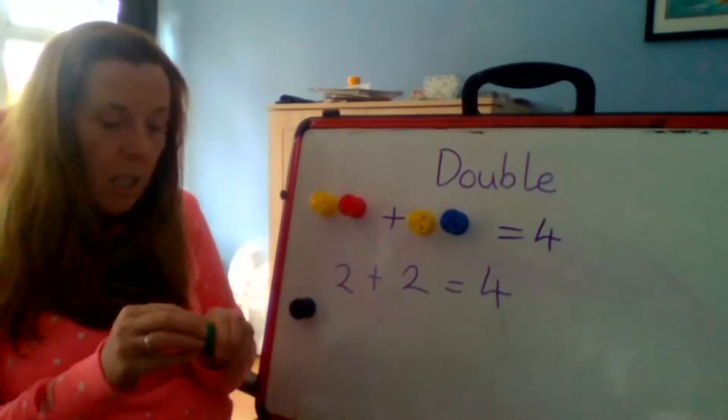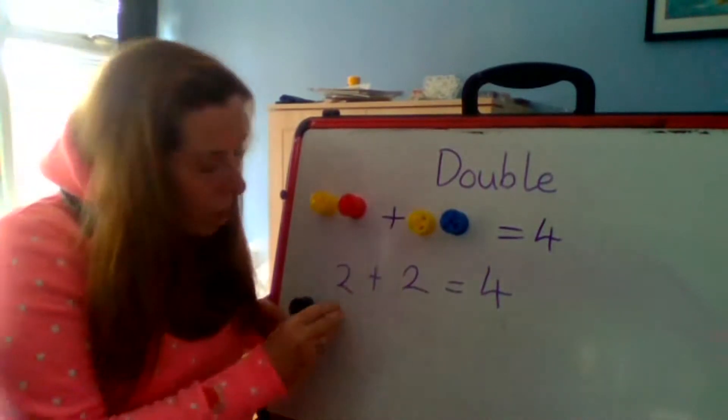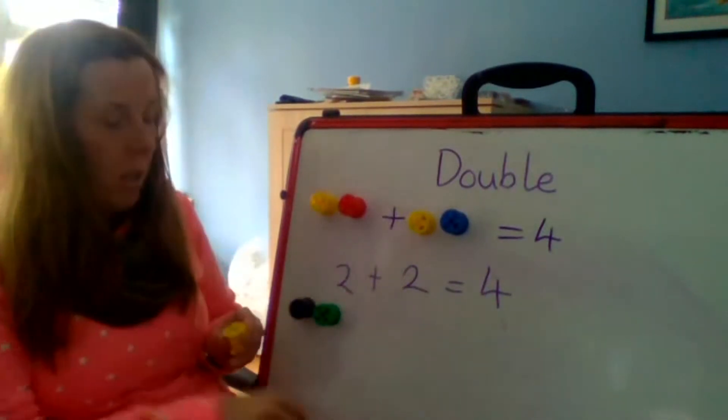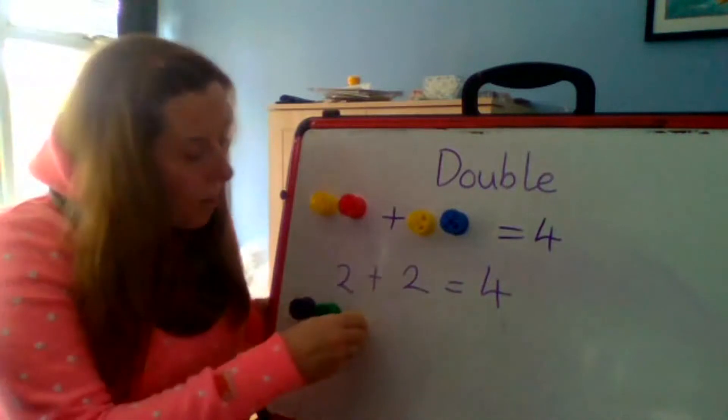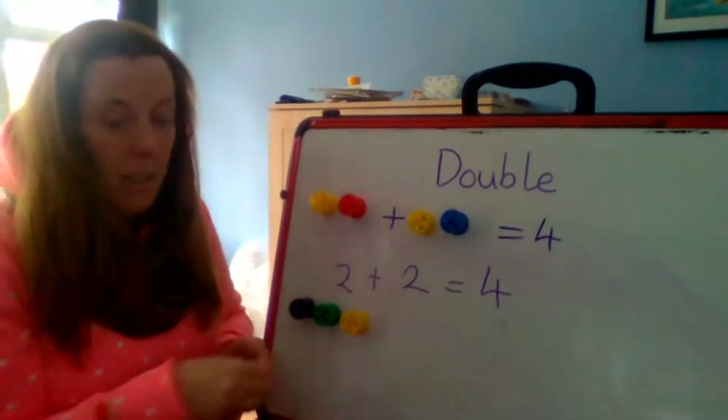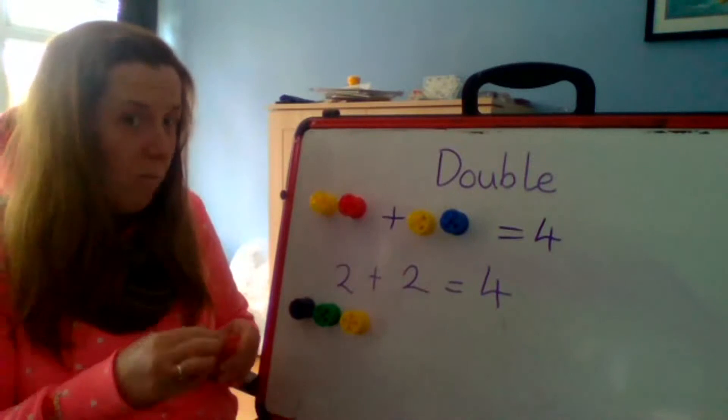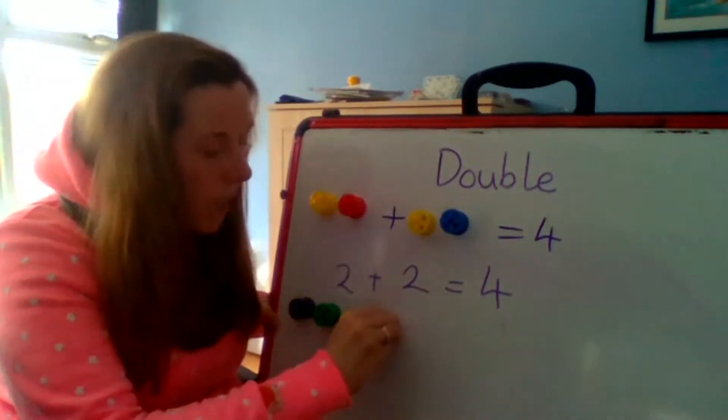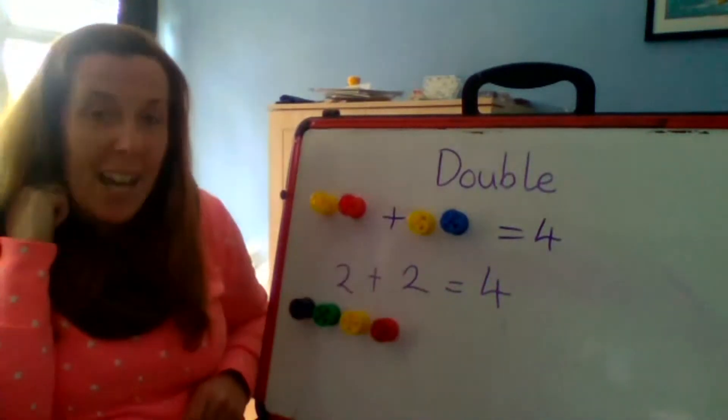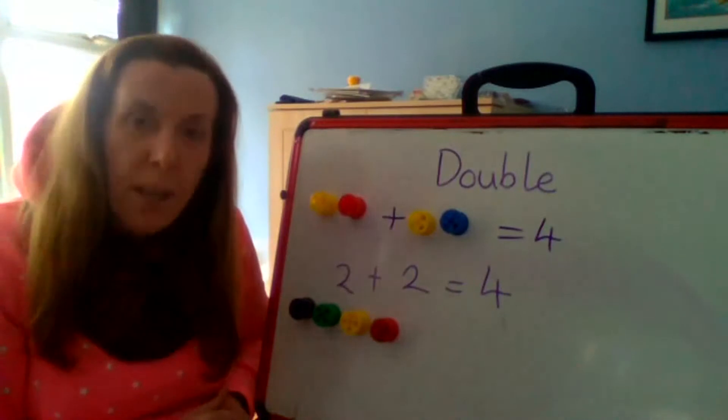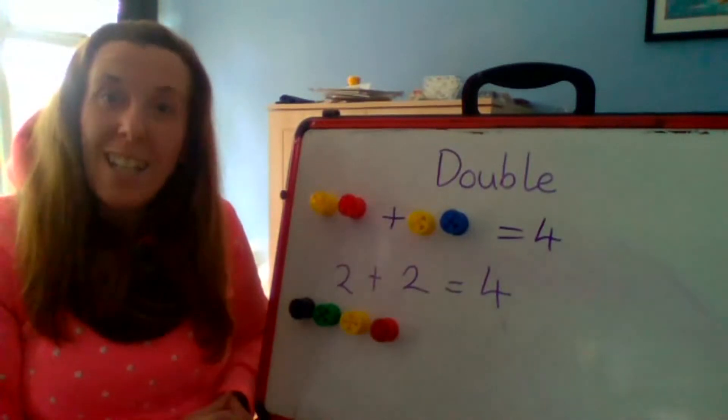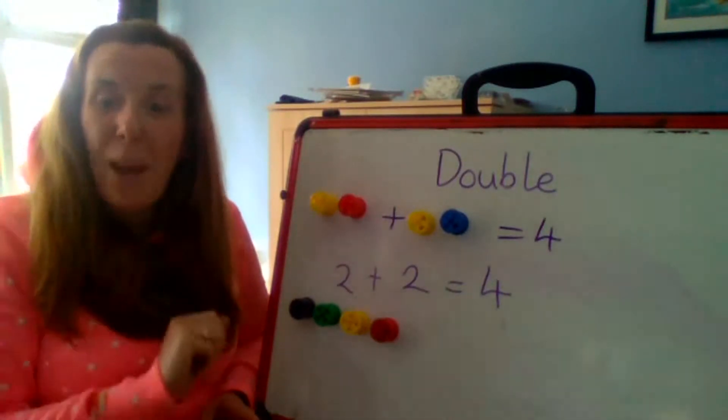One, two, three, four. So I've got four here. How many more do I need to add on to double it? If I'm doubling four, I need to add another four. Well done.